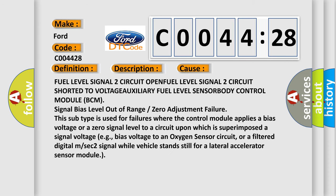This diagnostic error occurs most often in these cases. Fuel level signal 2 circuit open, fuel level signal 2 circuit shorted to voltage auxiliary, fuel level sensor body control module BCM. Signal bias level out of range or zero adjustment failure. This subtype is used for failures where the control module applies a bias voltage or a zero signal level to a circuit upon which is superimposed a signal voltage, e.g. bias voltage to an oxygen sensor circuit, or a filtered digital M or SEC 2 signal while vehicle stands still for a lateral accelerator sensor module.